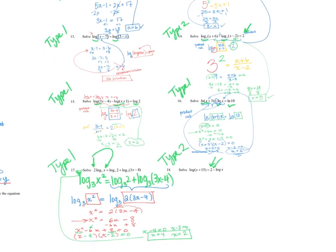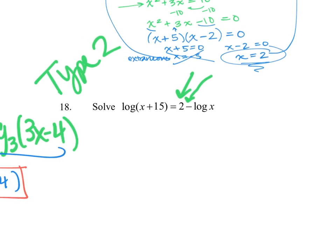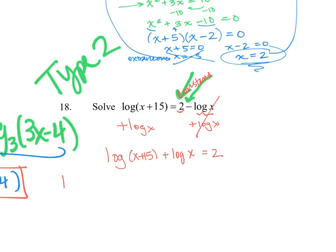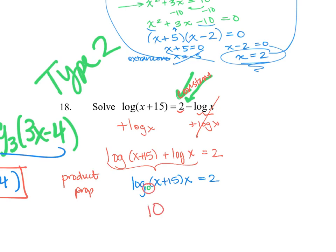Question 18 looks a bit different — we have a constant 2 and a log on the same side. Moving the log terms over, we get log of (x plus 15) plus log of x equals 2. Using the product property, we combine them into a single log: log of (x plus 15) times x equals 2. The base here is 10 — the common log — so we rewrite in exponential form: 10 squared equals (x plus 15) times x.